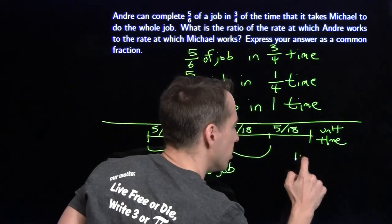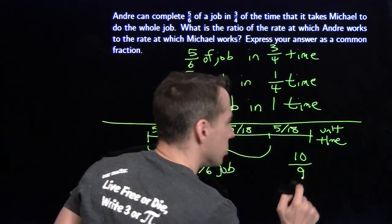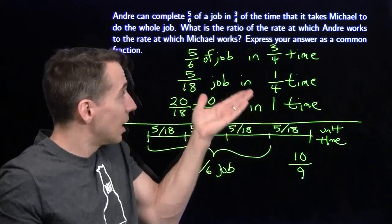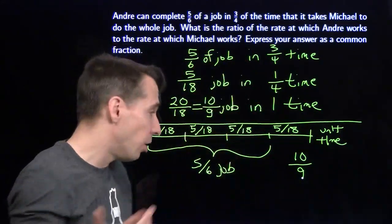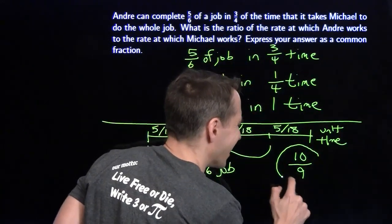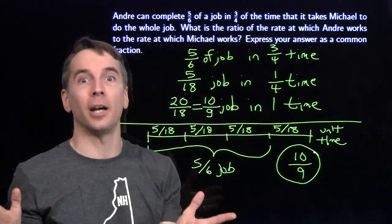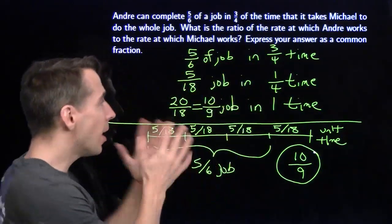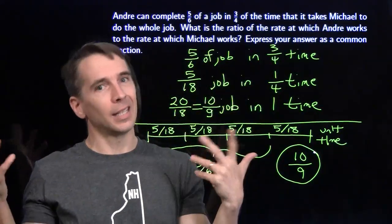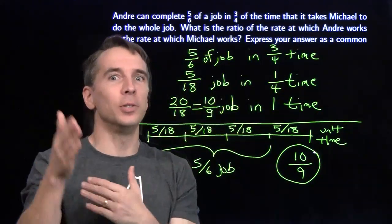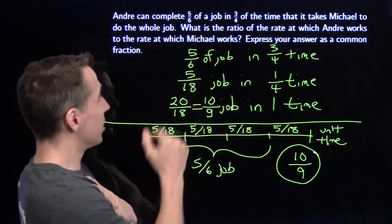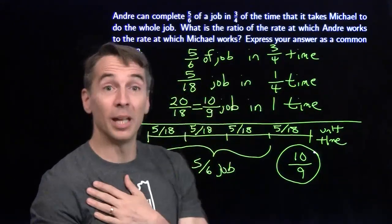20 eighteenths reduced to 10 ninths. So if you can do 10 ninths of the job in the same amount of time as Michael does the whole job, Andre is working at 10 ninths the rate of Michael. So Andre is faster. We want to hire Andre. So there you go. It's the gold standard. Do the problem two different ways. Get the same answer. You know you're right and you can move on. And I'm going to move on to go find Andre because that man works fast.